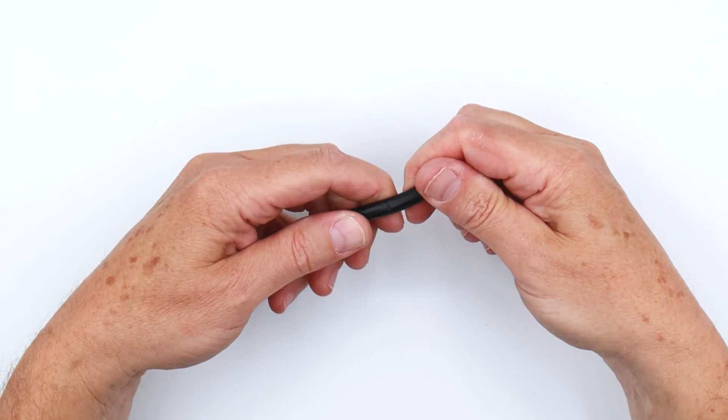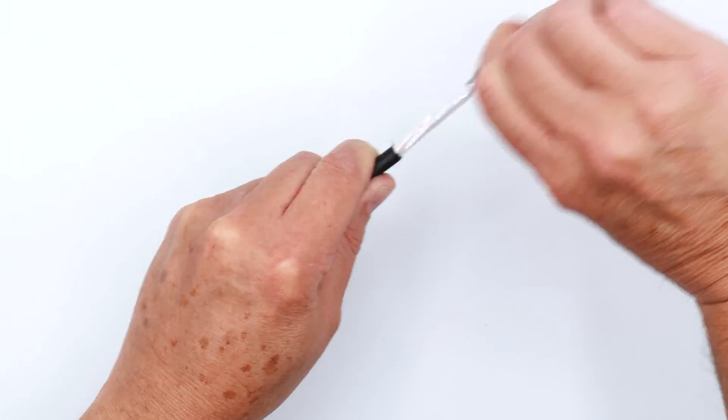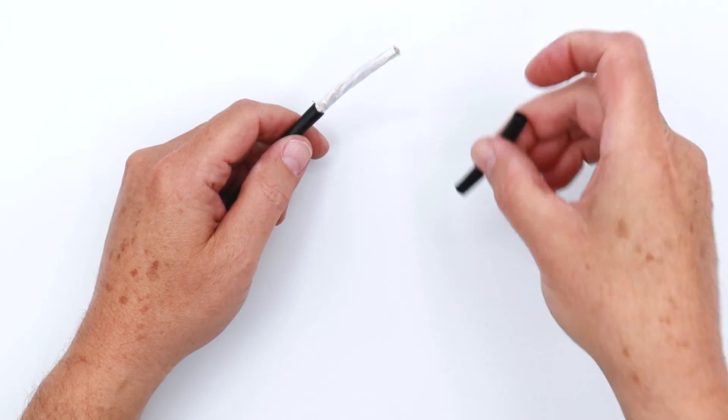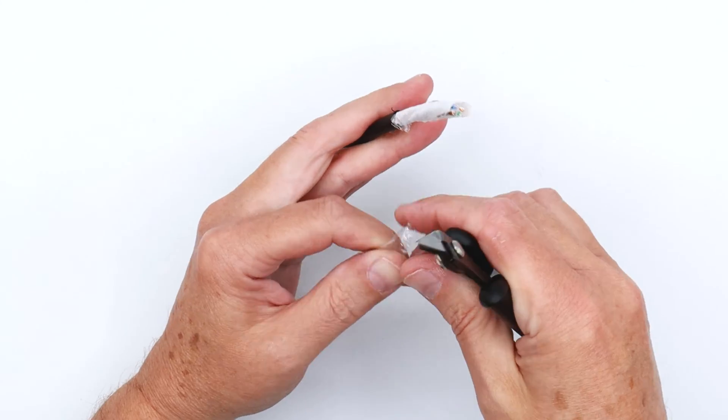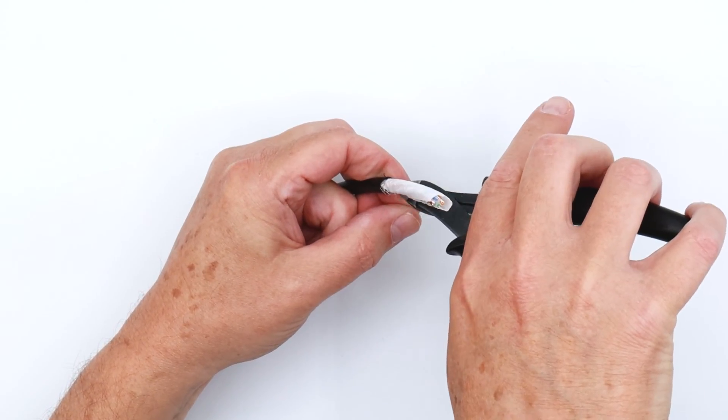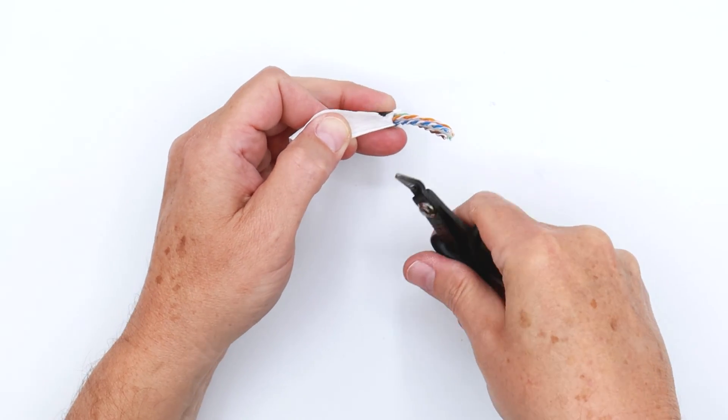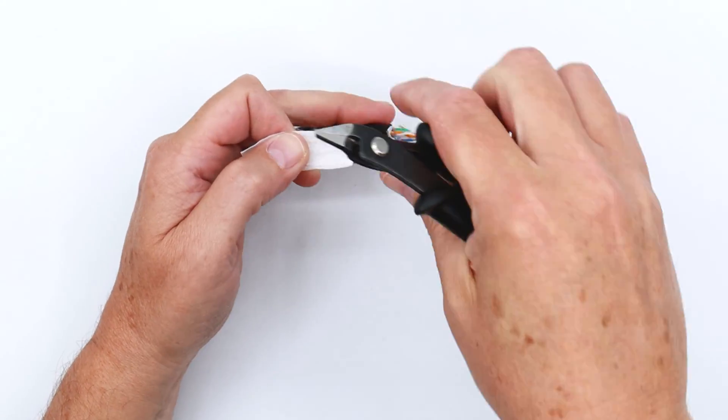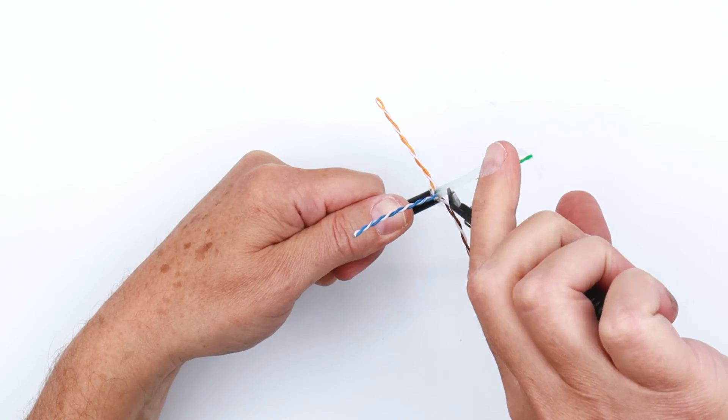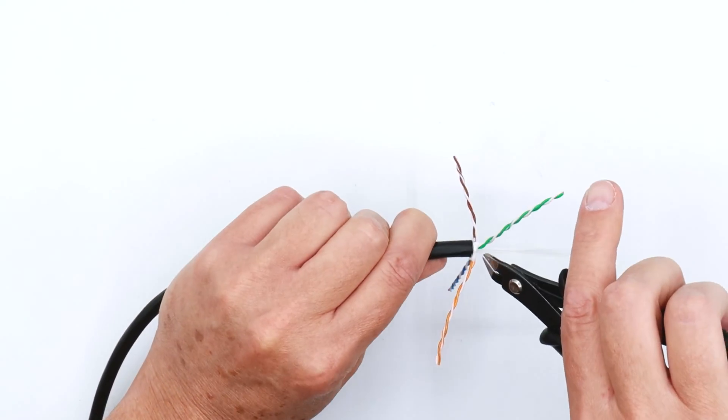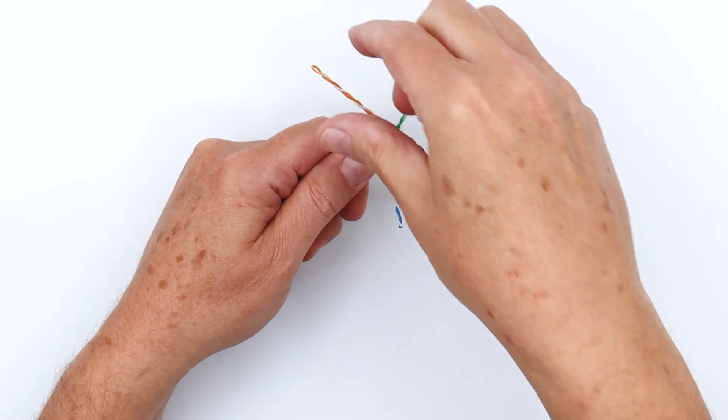You're looking to put a nice score on the cable jacket, which we did, pop it, keep that piece around, remove all the dielectric wraps. Remove spline. We're prepped up.